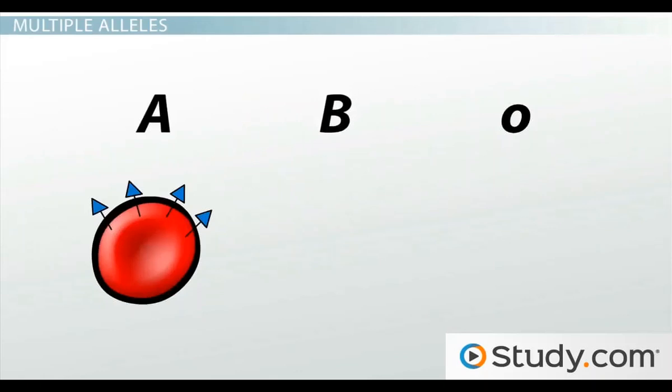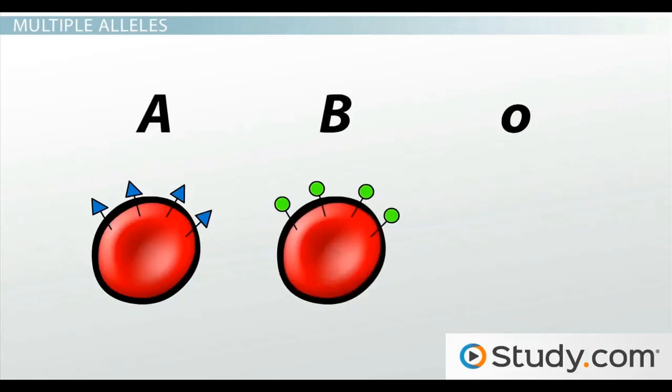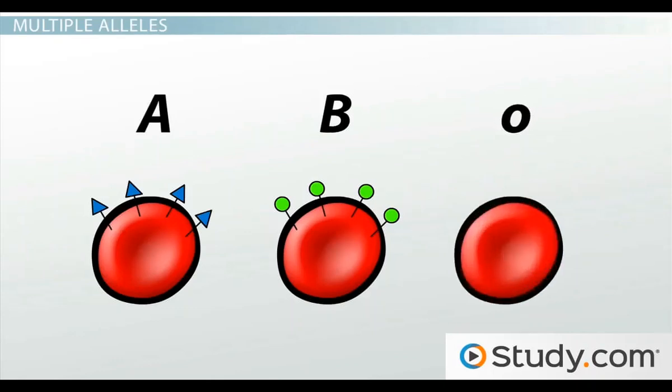The second allele, allele B, also helps produce an extracellular sugar which is slightly different but also expressed on the outside of red blood cells. The third allele, the O allele, produces no extracellular sugar, so you end up with a red blood cell with no extracellular sugars on the outside.